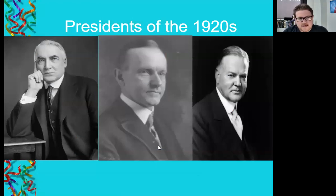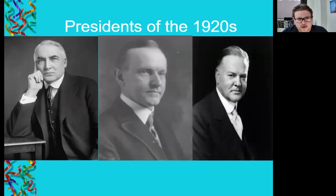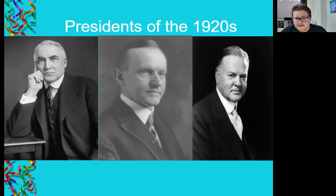These are the presidents of the 1920s. This is Warren G. Harding, who's elected right after Woodrow Wilson. At the end of World War I, Harding brings a message of returning to normalcy. He wins, and his vice president is Calvin Coolidge. Harding dies about two years into his first term, and Coolidge becomes president. Fun little fact — his father actually swore him in at Coolidge's boyhood home, as Harding died unexpectedly in California. Coolidge's father was a magistrate in their local community. Imagine being a father getting to swear in your son as president.